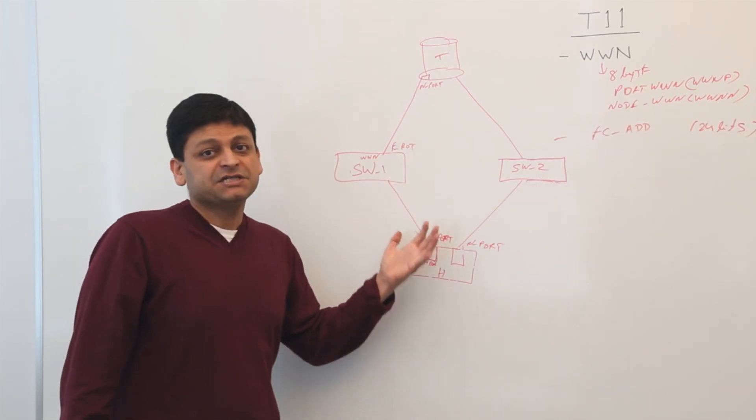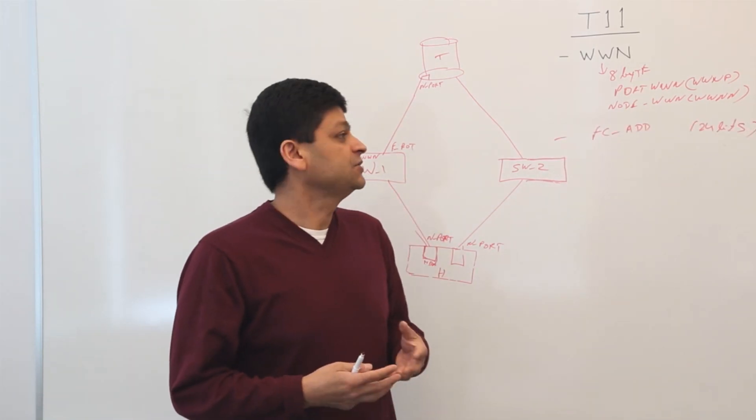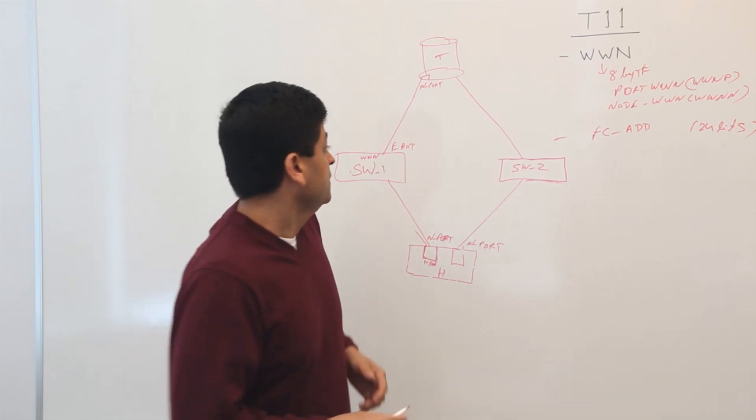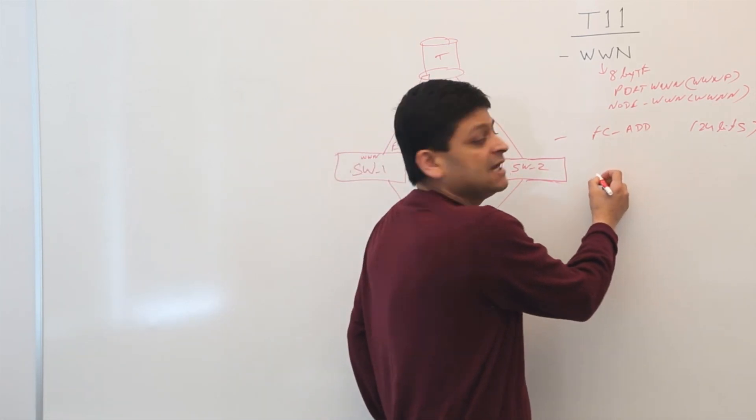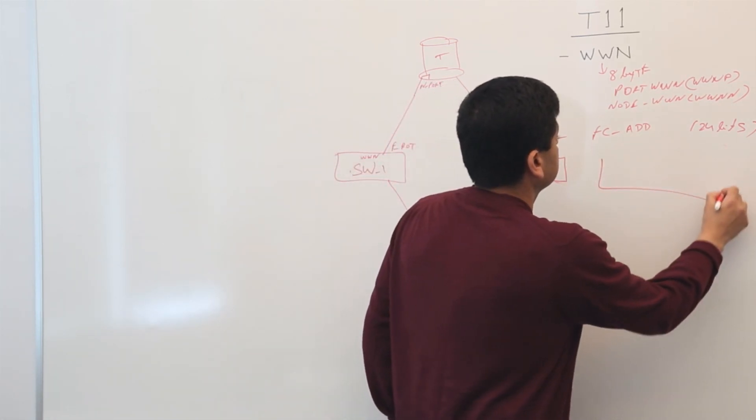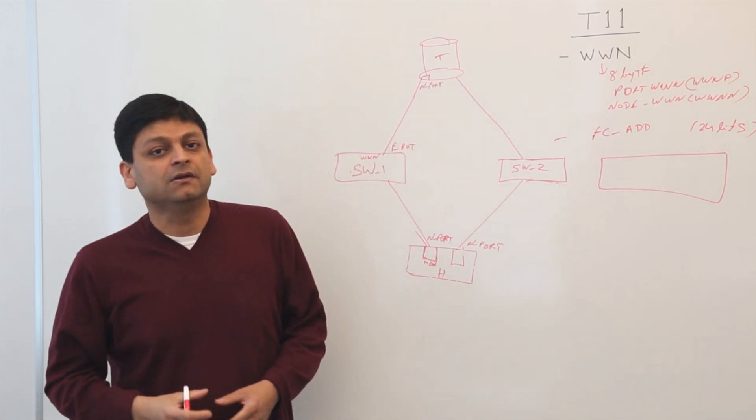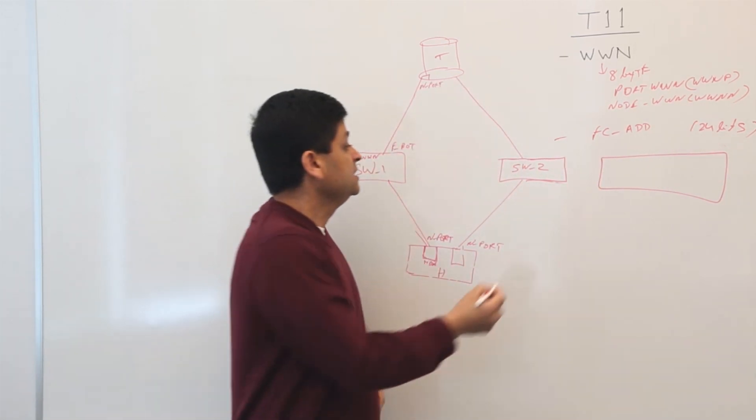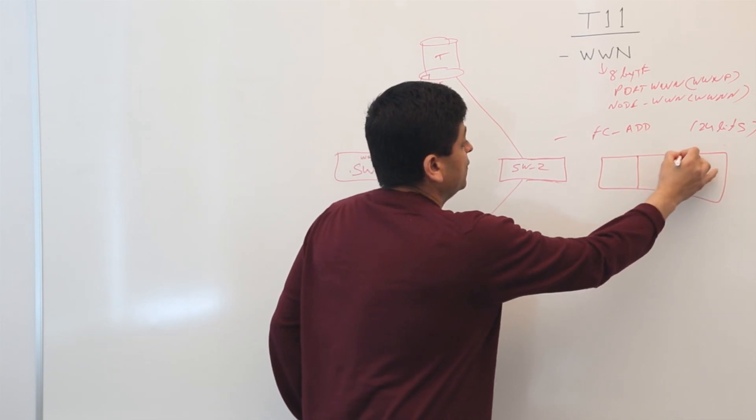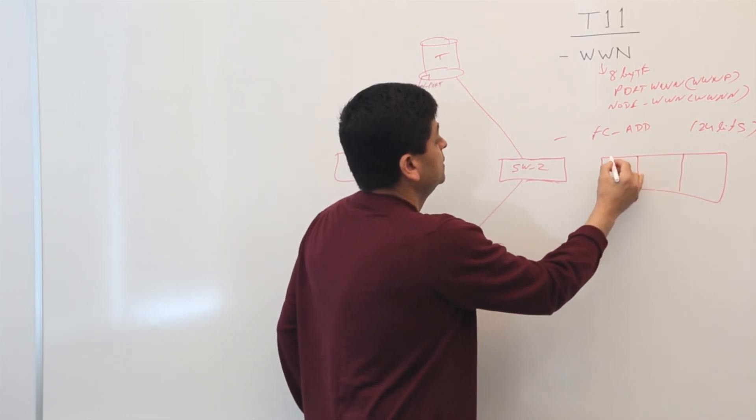So Fiber Channel also has an address, similar to an IP address, as I mentioned before. Fiber Channel addresses are 24 bits. Fiber Channel address is hierarchical. What I mean by hierarchical is typically every field has some meaning.